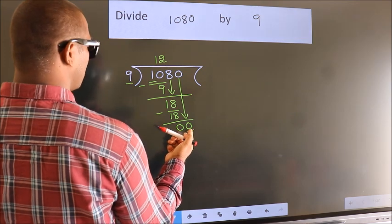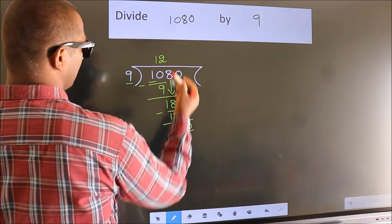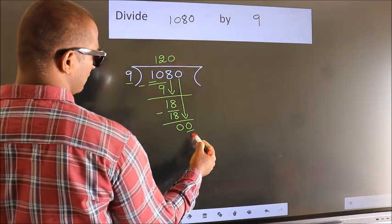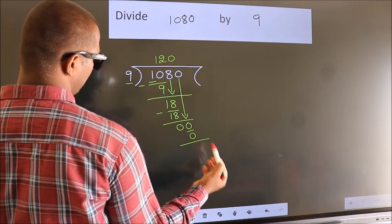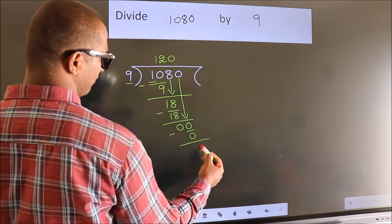When do we get 0? In the 9 table, 9 times 0 is 0. Now we subtract. We get 0.